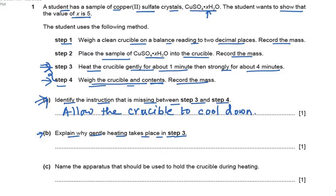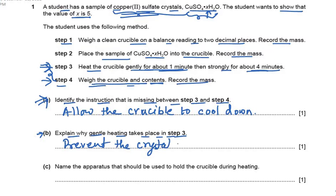Part B: explain why gentle heating takes place in step 3. Step 3 says heat the crucible gently for one minute and then strongly. We are heating copper(II) sulfate crystals. If we heat crystals very strongly directly, they are going to spit into powder. So the main reason for gentle heating is to prevent the crystals of copper sulfate from spitting — spitting means breaking down of the crystals into powder.